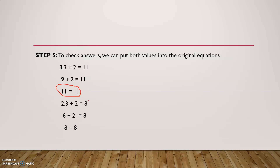For the other equation, 2m plus n equals 8, we insert m equals 3 and n equals 2. Working it out: 2 times 3 is 6, plus 2 equals 8. So 6 plus 2 is 8 — the left side and right side of the equation match, confirming our answers for m and n are correct.